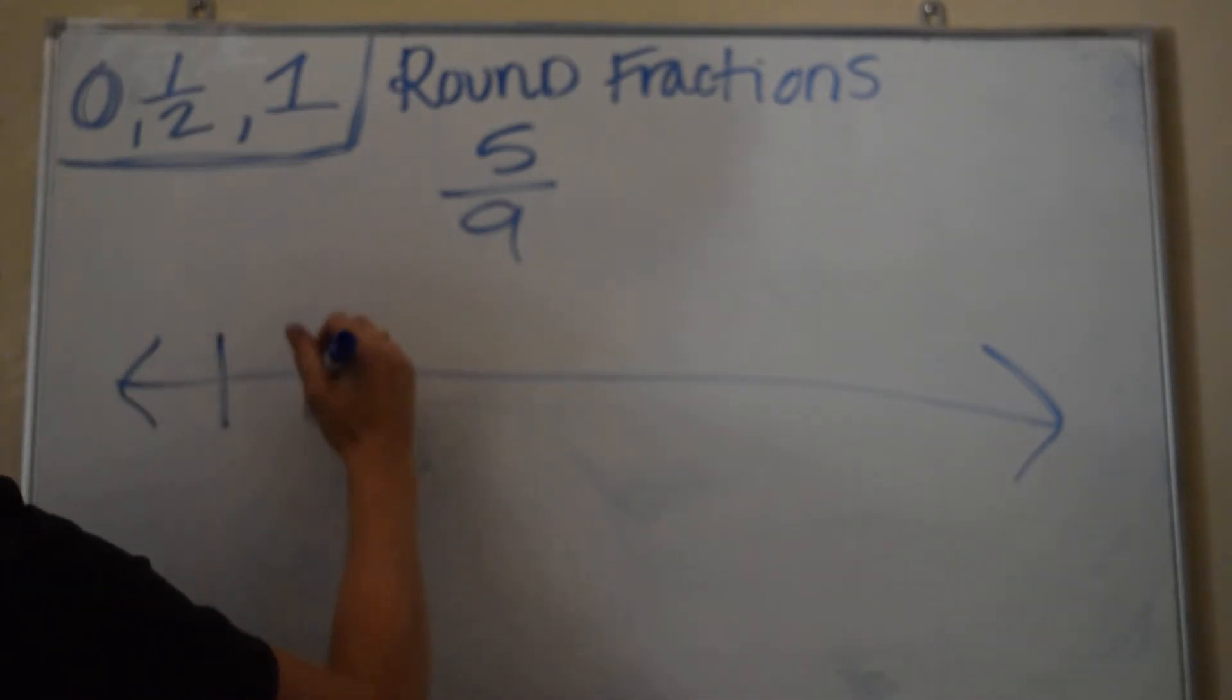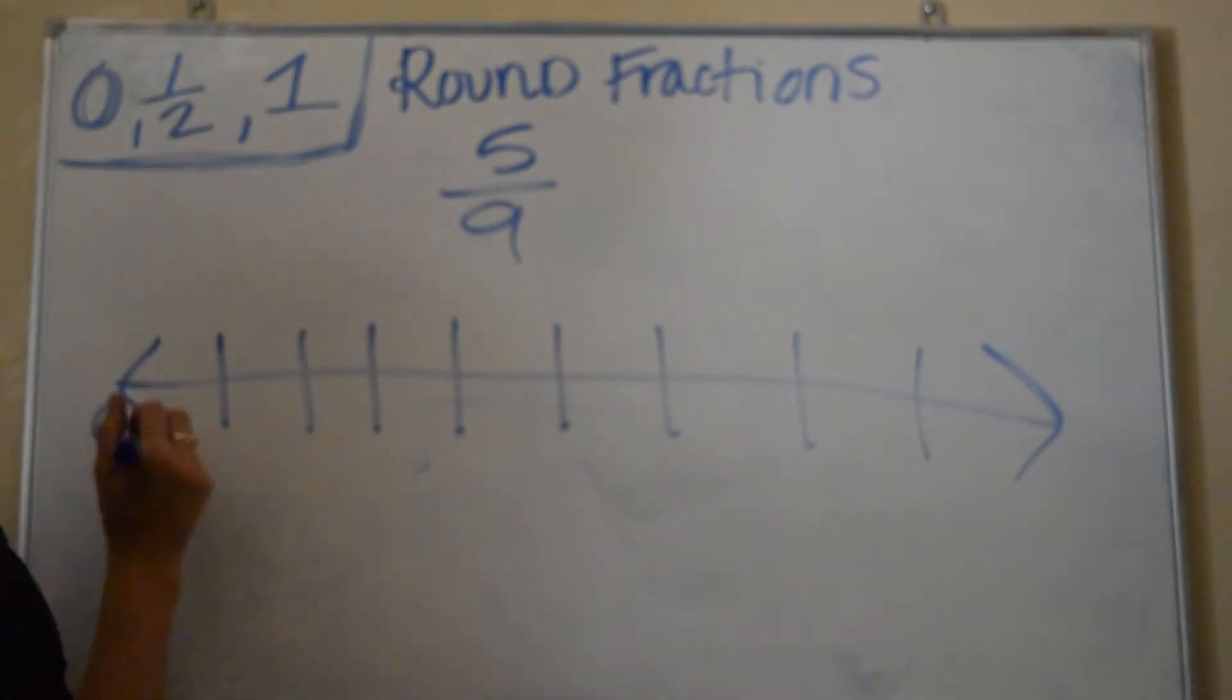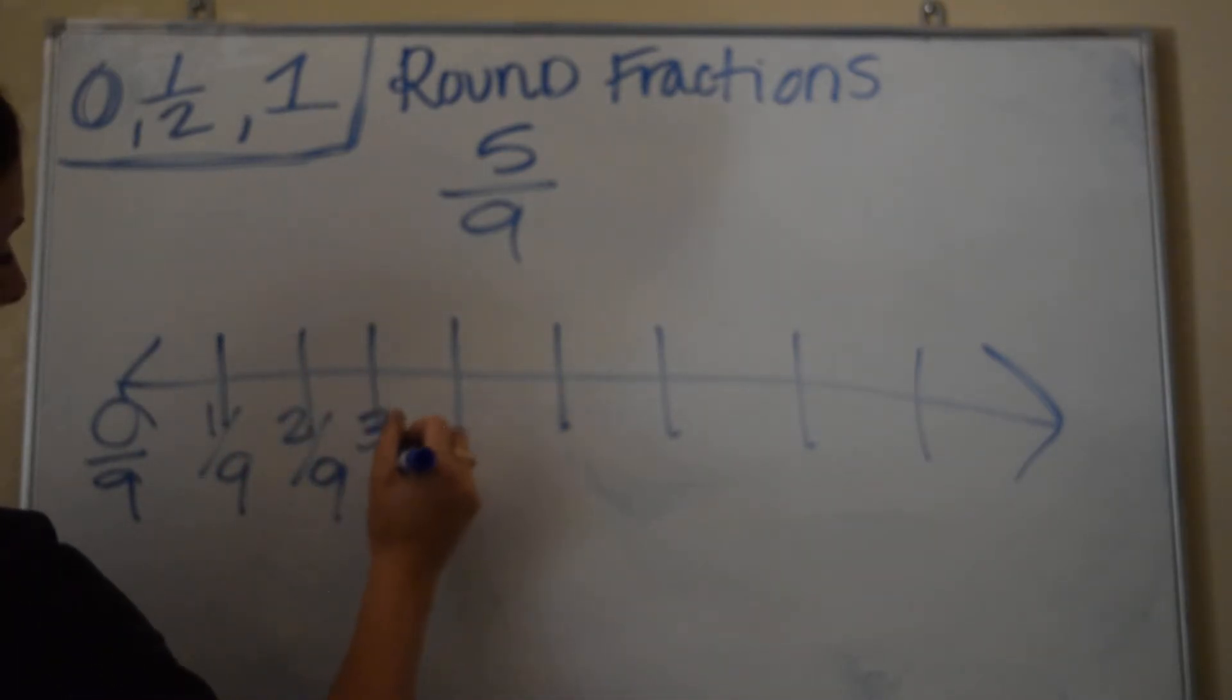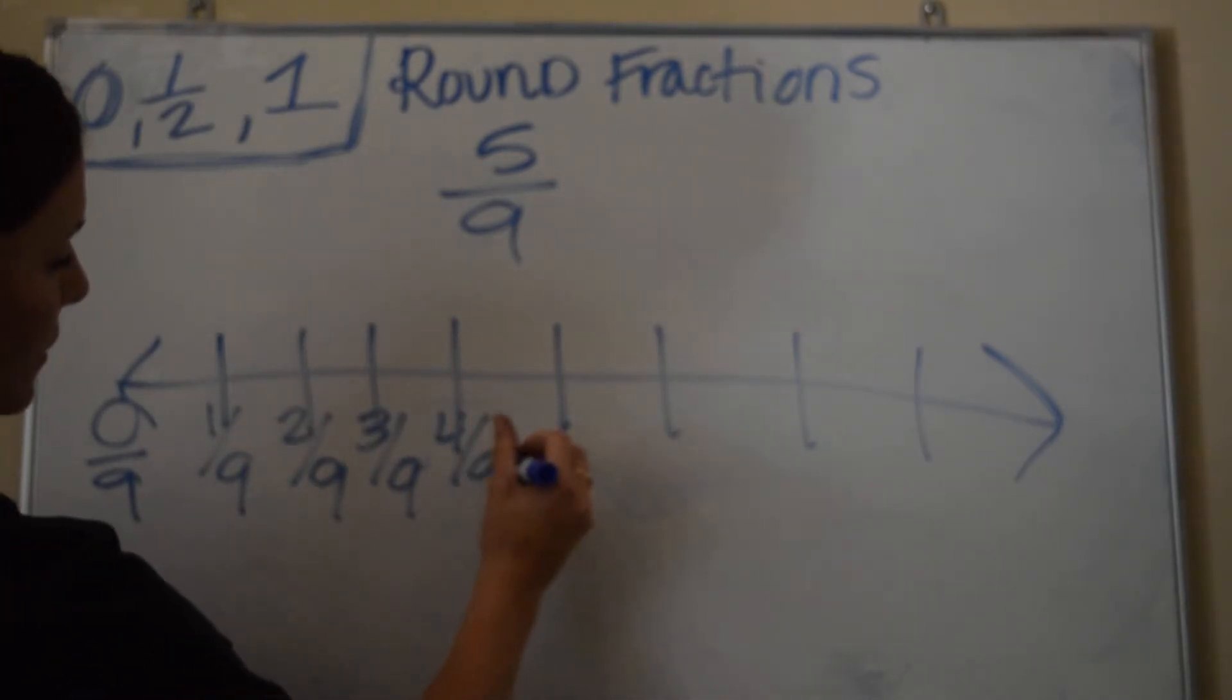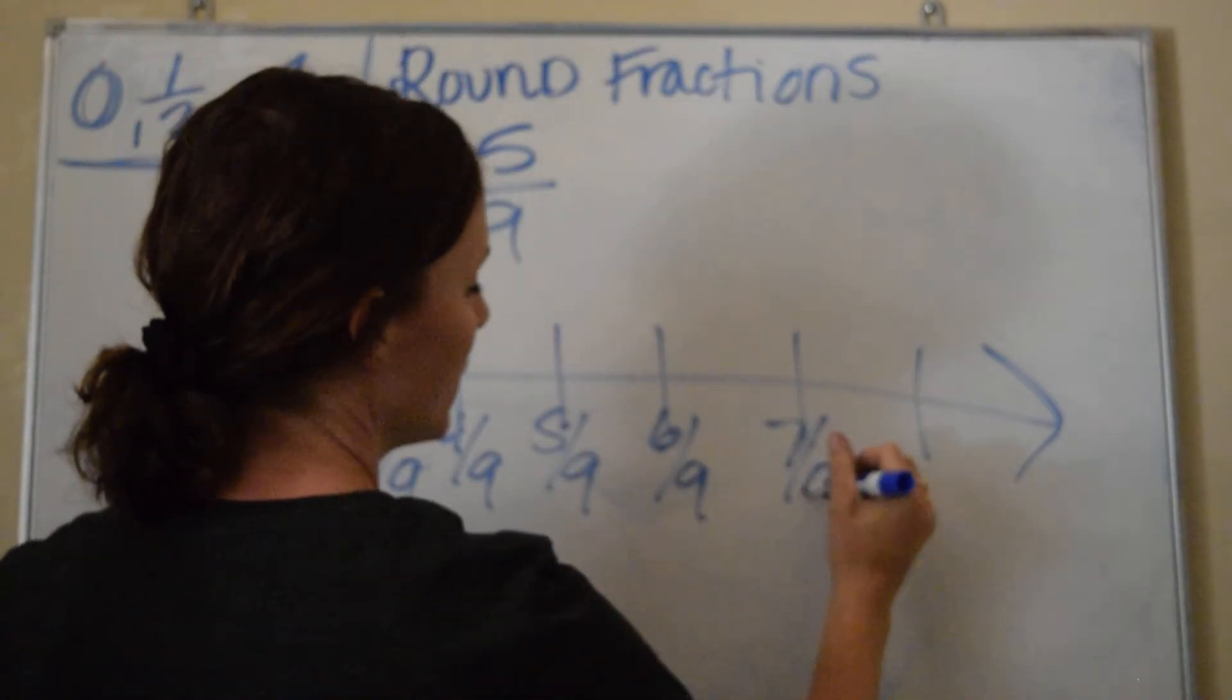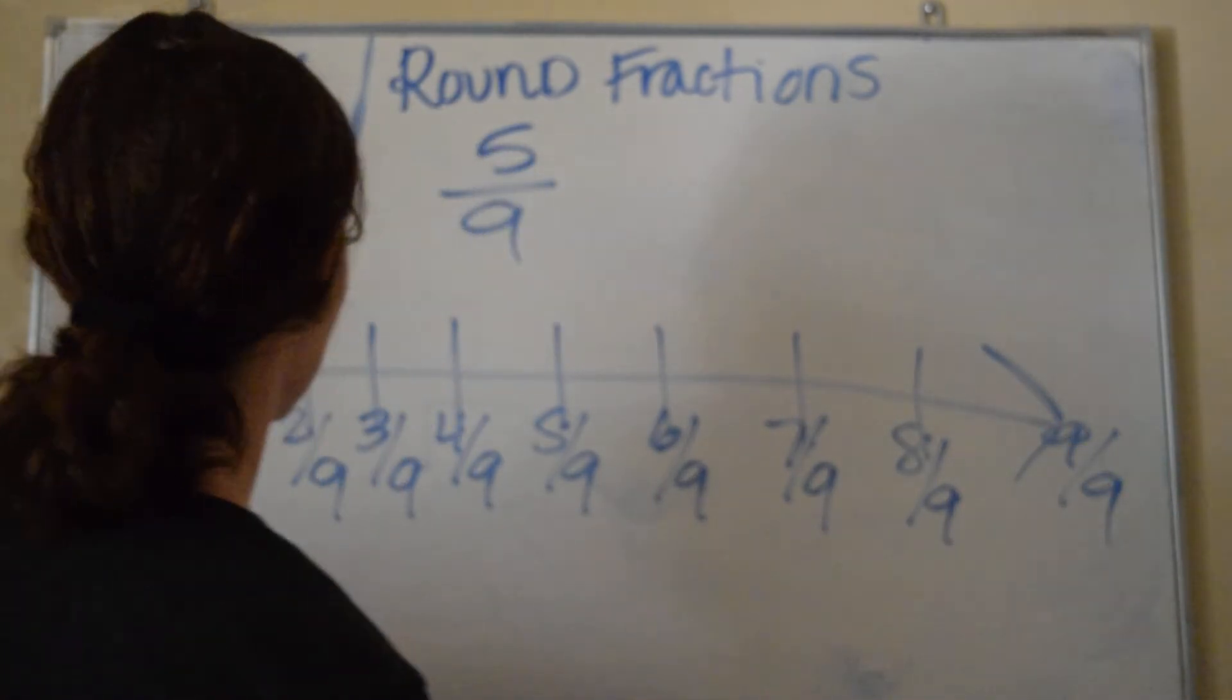So 1, 2, 3, 4, 5, 6, 7, 8. This would be 0 out of 9, this would be 1/9th, 2/9th, 3/9ths, 4/9ths, 5/9ths, 6, 7, 8, and 9/9ths.